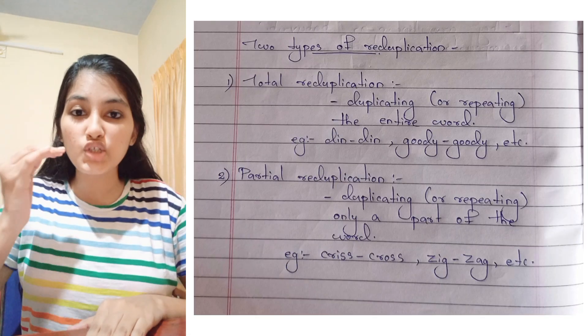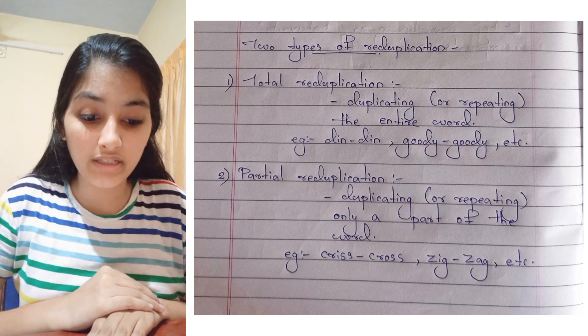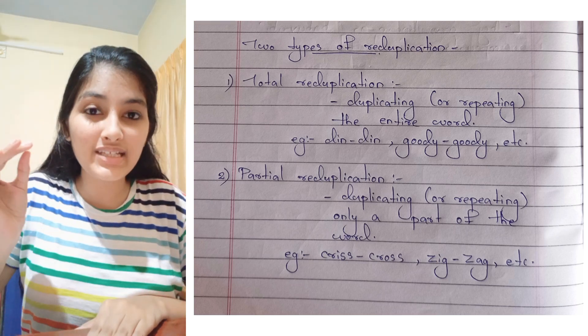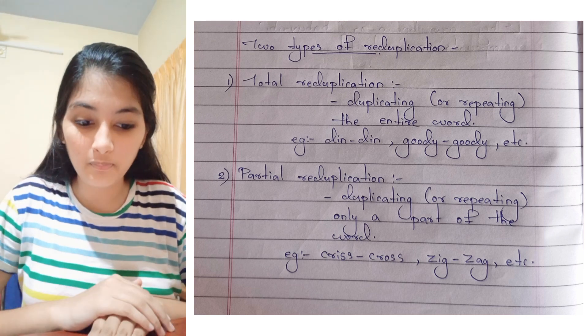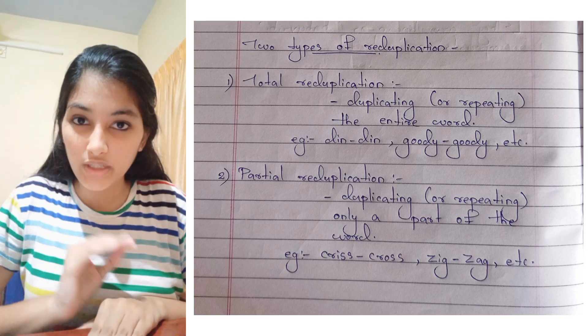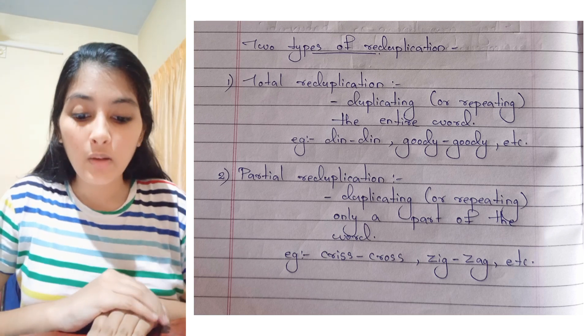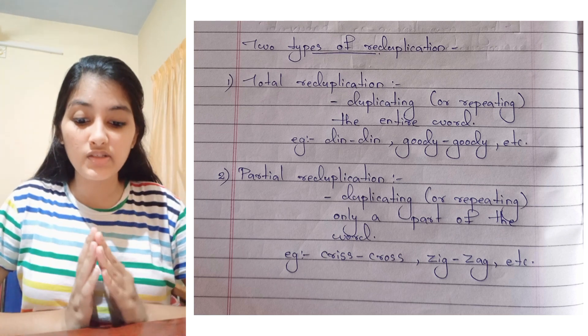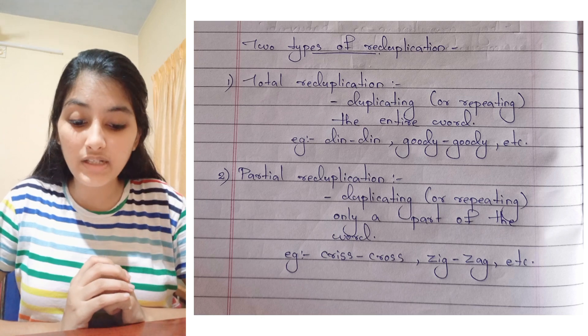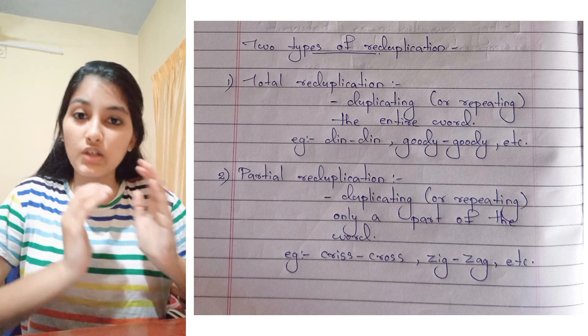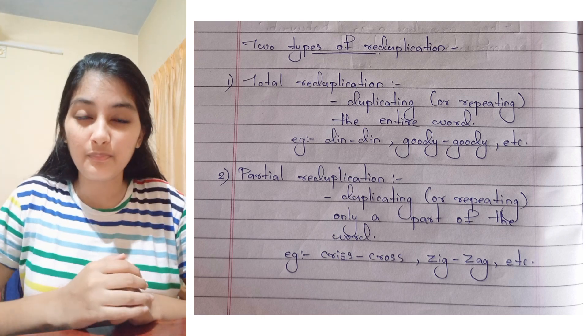There are two types of reduplication: total reduplication and partial reduplication. Total reduplication means duplicating the entire word. Examples: din-din, goody-goody. Partial reduplication means duplicating only a part of the word. Examples: criss-cross, zig-zag, etc.